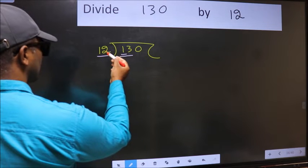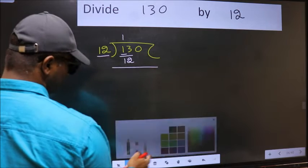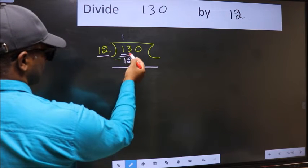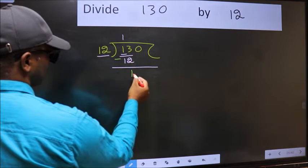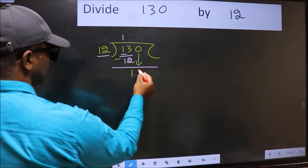A number close to 13 in 12 table is 12 once 12. Now, you should subtract. 13 minus 12 is 1. After this, bring down the beside number. So, 0 down.